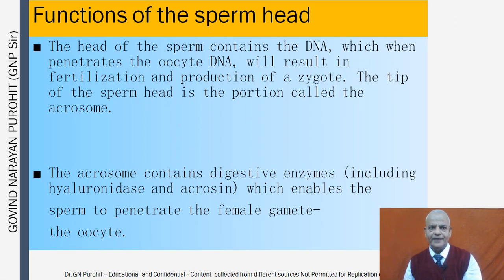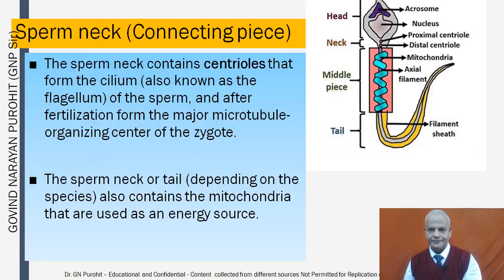The head of the sperm contains DNA which, when it penetrates the oocyte, results in fertilization and production of a zygote. The acrosome at the tip of the sperm head contains digestive enzymes including hyaluronidase and acrosin, enabling the sperm to penetrate the female gamete. The sperm neck, also known as the connecting piece, contains centrioles that form the flagellum of the sperm and after fertilization forms the major microtubule organizing center of the zygote.